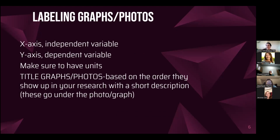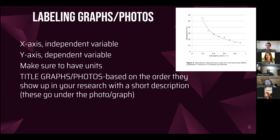For the labeling of graphs and photos: the x-axis should be the independent variable, the y-axis the dependent variable. Make sure they have units. Students will talk judges through most graphics during the interview, but we want judges to be able to get the gist without having to ask questions. Graphs and photos are titled based on the order they appear — for example, 'Figure 1' — and then a caption gives an idea of what the student was looking for and what the experiment was.